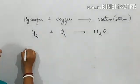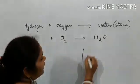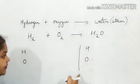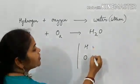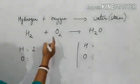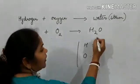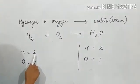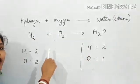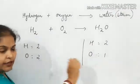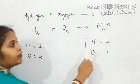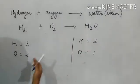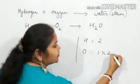We make a list of all elements on the left-hand side and the right-hand side, keeping the same sequence on both sides. Tabulating the number of atoms: on the left, hydrogen is 2 and oxygen is 2; on the right, hydrogen is 2 and oxygen is 1. Checking: hydrogen atoms on both sides is 2, so hydrogen is balanced. Oxygen on the reactant side is 2 and on the product side is 1, so we multiply with a coefficient to make them equal. Multiplying by 2 makes oxygen 2 on the product side.